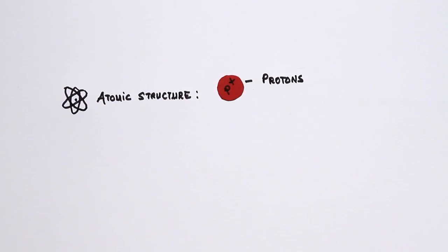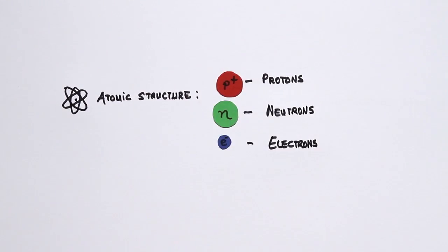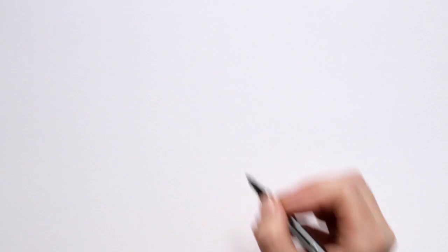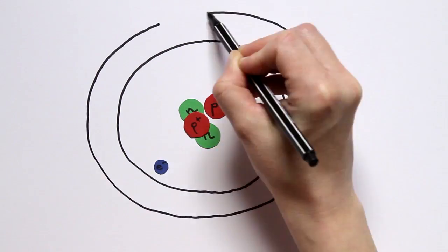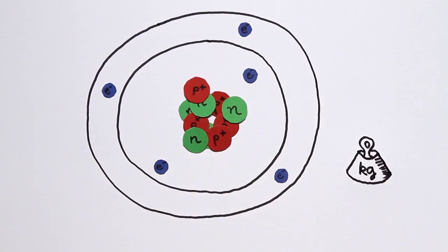To understand how new elements come into being, one has to first examine the makeup of atoms. An atom comprises uncharged neutrons and positively charged protons in its core and negatively charged electrons in the shell. The greater the number of protons and neutrons in the atomic core, the heavier the element.